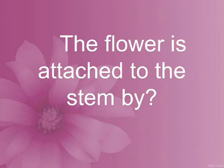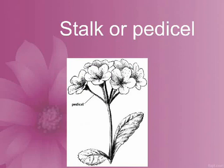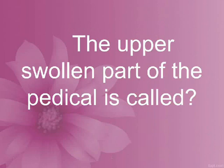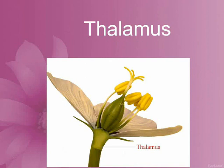The flower is attached to the stem by a stalk or peduncle. The upper swollen part of the pedicle is called the thalamus.